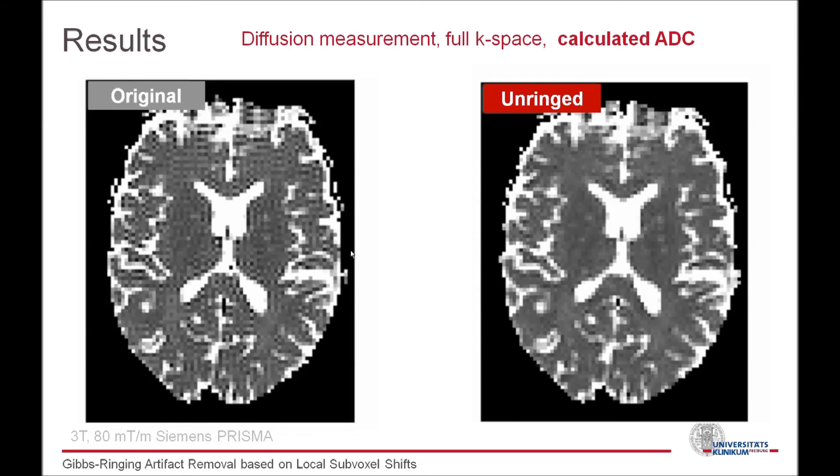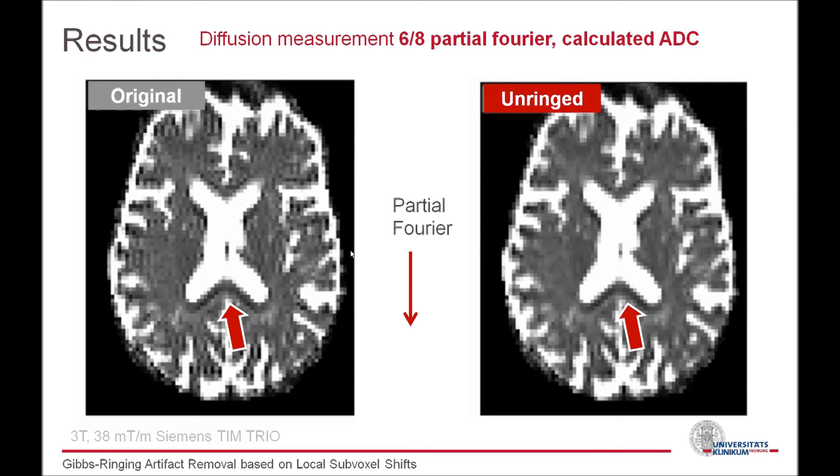It should also be noted that the method cannot remove ringing artifacts in partial Fourier acquisitions. The concept was built on the assumption of having symmetric k-space data. So with partial Fourier, together with zero-filling, it can sometimes even be hard to identify the artifact as such. The oscillation length is now larger than one pixel. For example, have a look directly behind the ventricles here. The artifact might even be misunderstood as a feature there. The proposed method will leave this artifact almost untouched in partial Fourier direction and remove it in the other direction, which was acquired symmetrically in k-space.